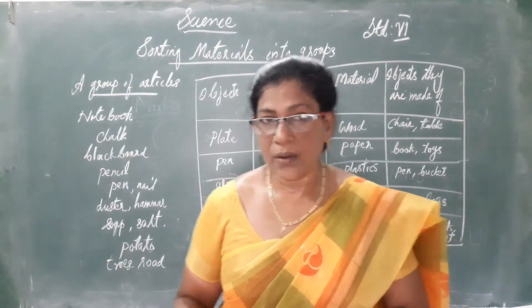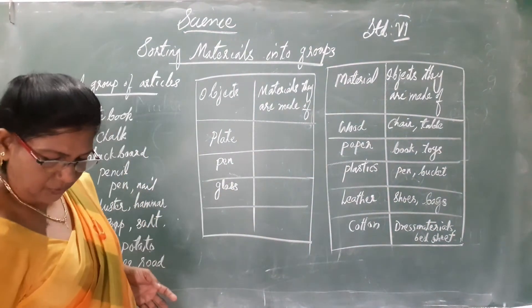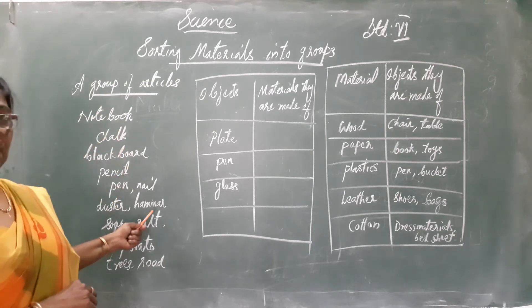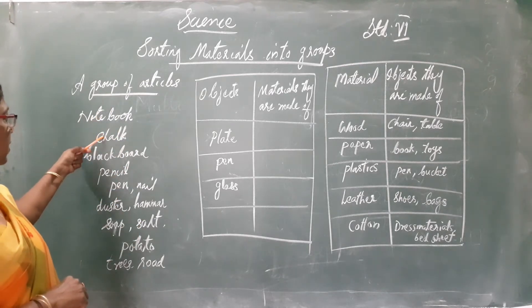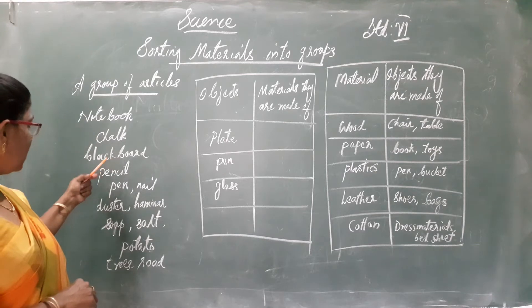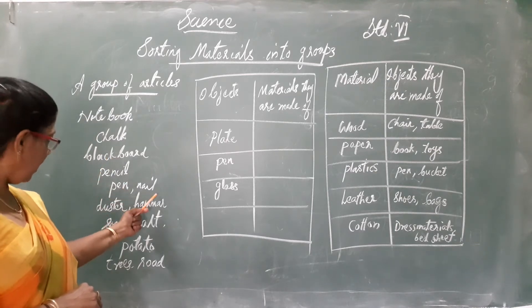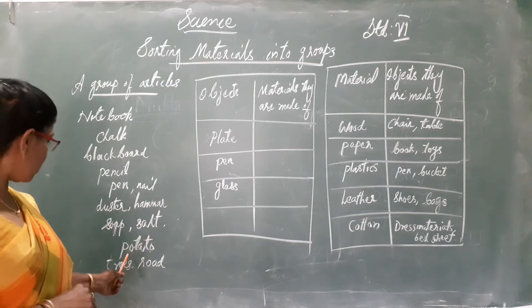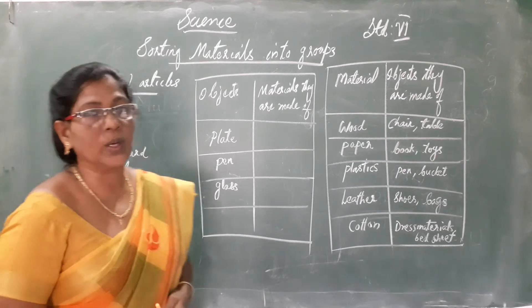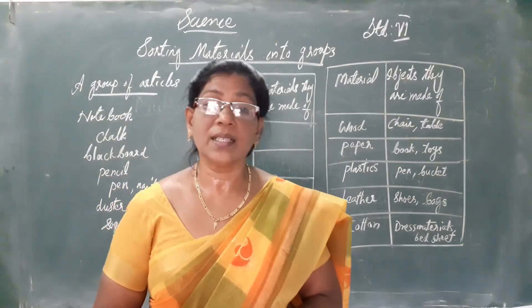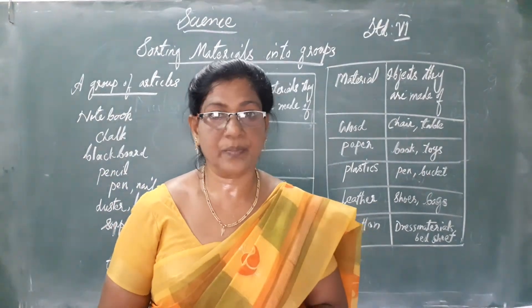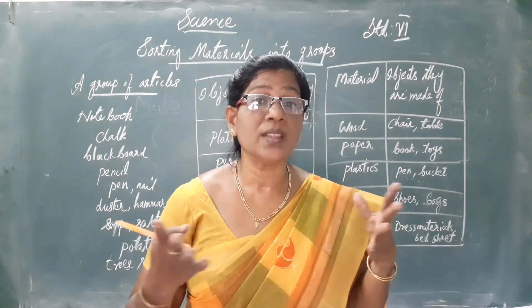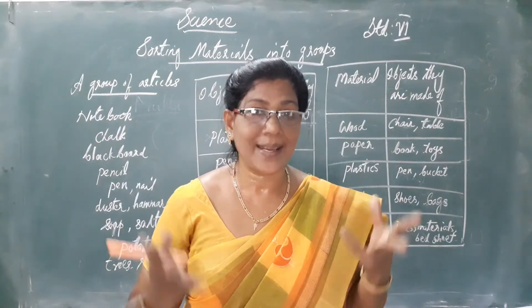I have given you a list of things on the board, which are notebook, chalk, blackboard, pencil, pen, nail, duster, hammer, saw, sword, potato, trees, road, buildings, and many many other things are around us. What we are going to do is we have to sort out these different things into different categories.